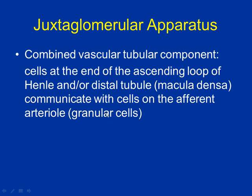The granular cells sit on the afferent arteriole, so they can regulate blood flow. They stimulate smooth muscle — which always contracts — and if that smooth muscle around the afferent arteriole starts squeezing, it constricts the arteriole, slowing the flow and thus slowing the movement of urine through the process. The macula densa detects concentration; the granular cells adjust the size of the afferent arteriole.